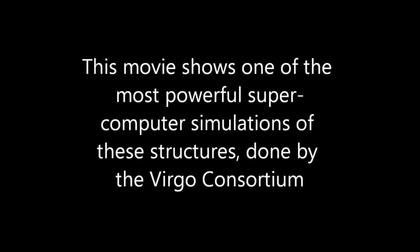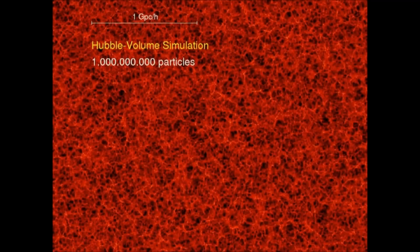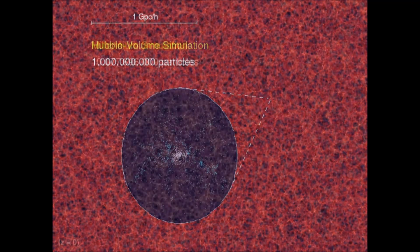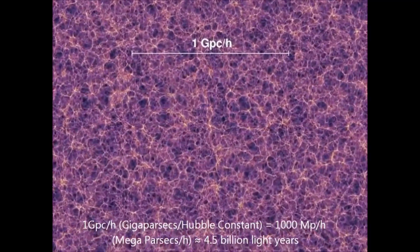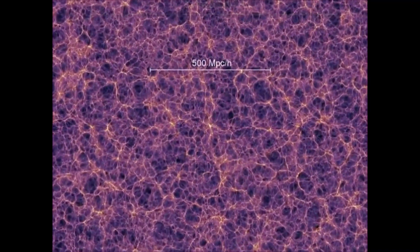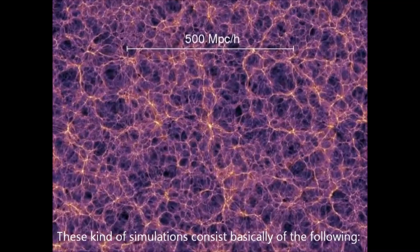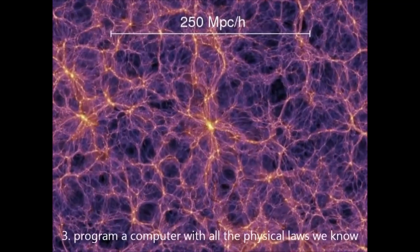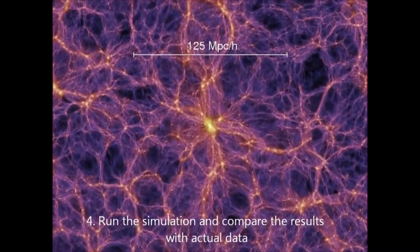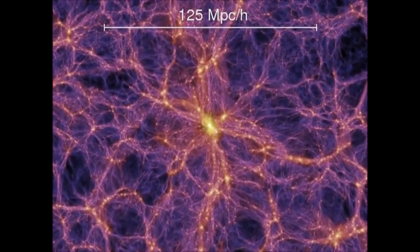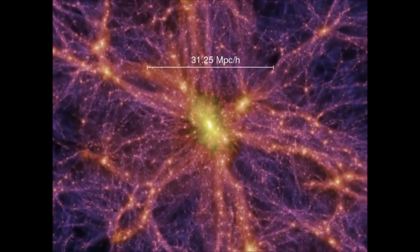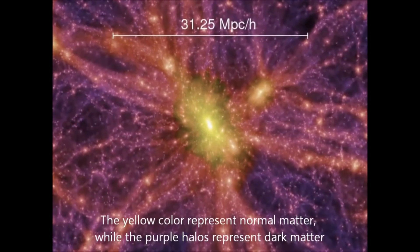This movie shows one of the most powerful supercomputer simulations of these structures, done by the Virgo Consortium. These kind of simulations consist basically of the following: 1. Grab a virtual box of a few billion cubic light years. 2. Put in there some billion of primordial particles. 3. Program a computer with all the physical laws we know. 4. Run the simulation and compare the results with actual data. Every yellow dot you see here is an entire galaxy. The yellow color represents normal matter, while the purple halos represent dark matter.